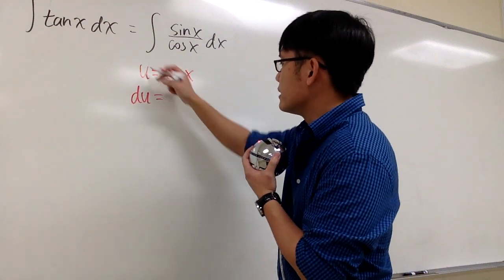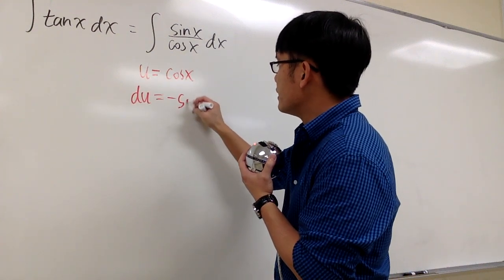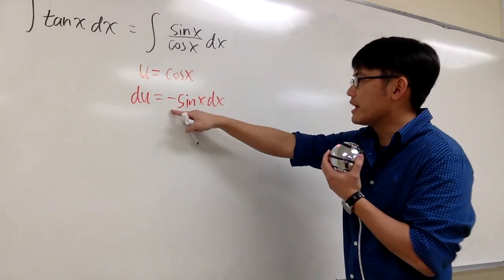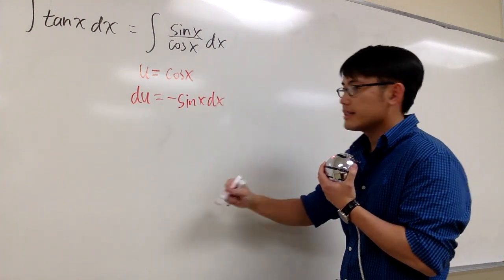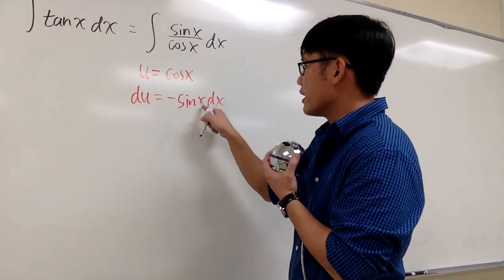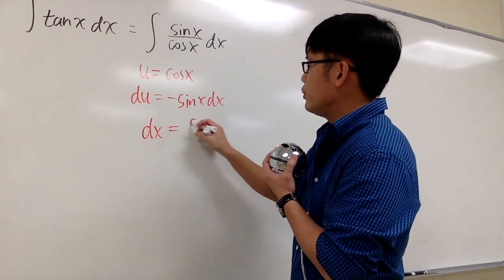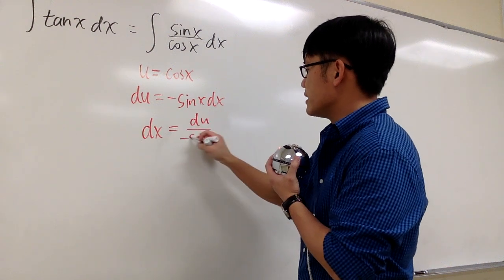Let's differentiate both sides. du will be negative sin x dx. The derivative of cos x is negative sin x. And I want to isolate the dx, so I can divide both sides by negative sin x. In other words, dx will be du over negative sin x.